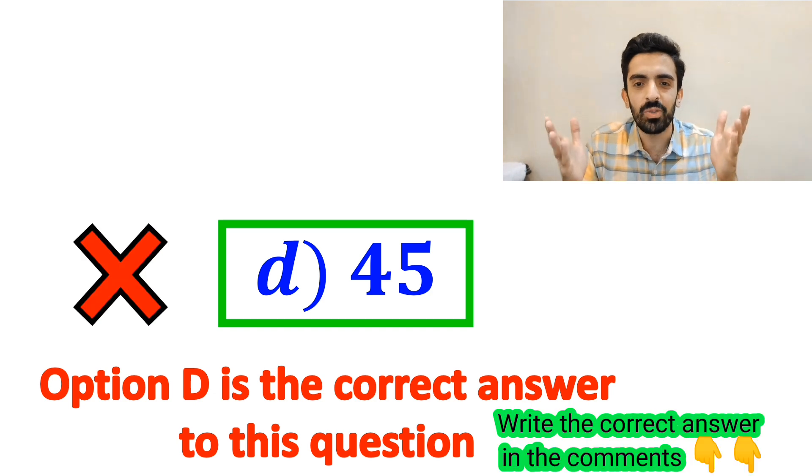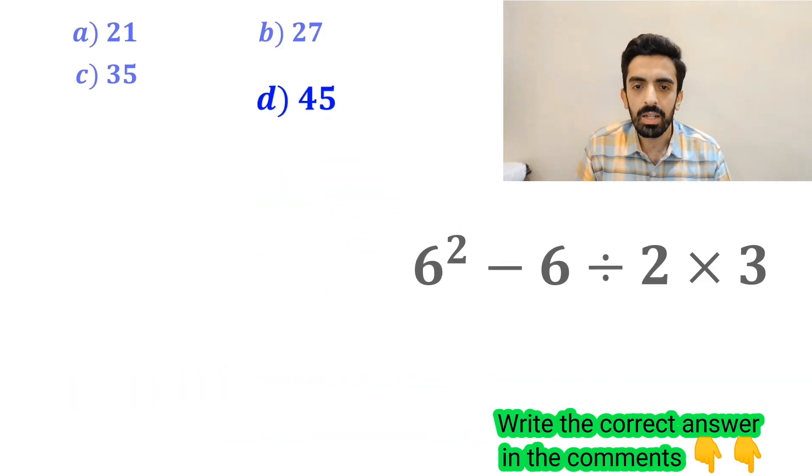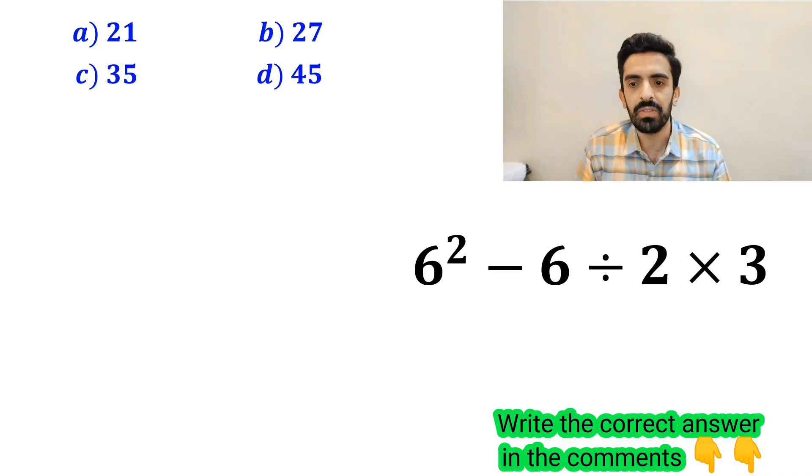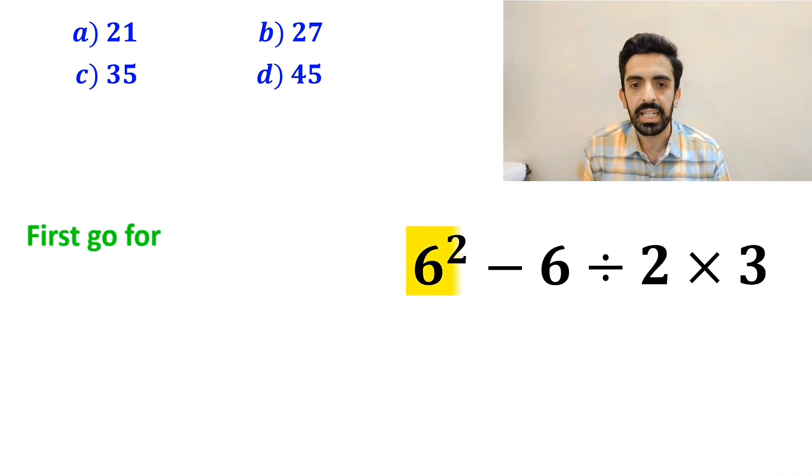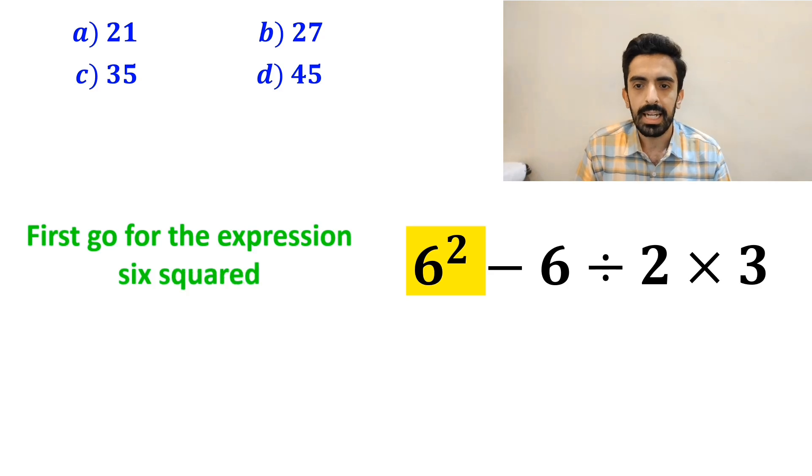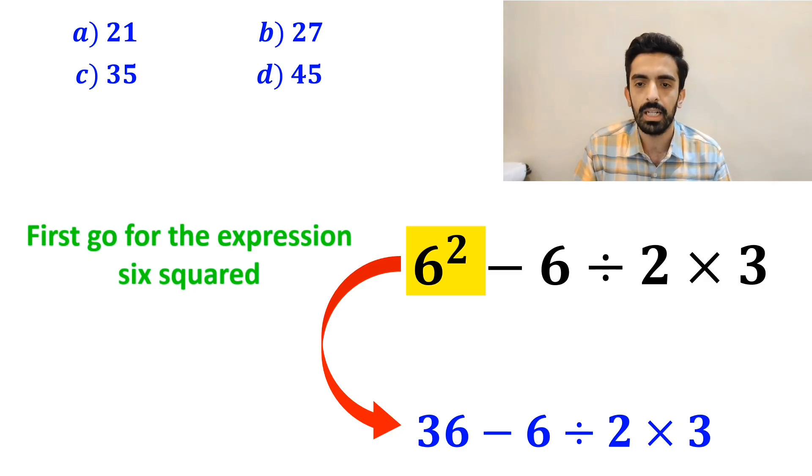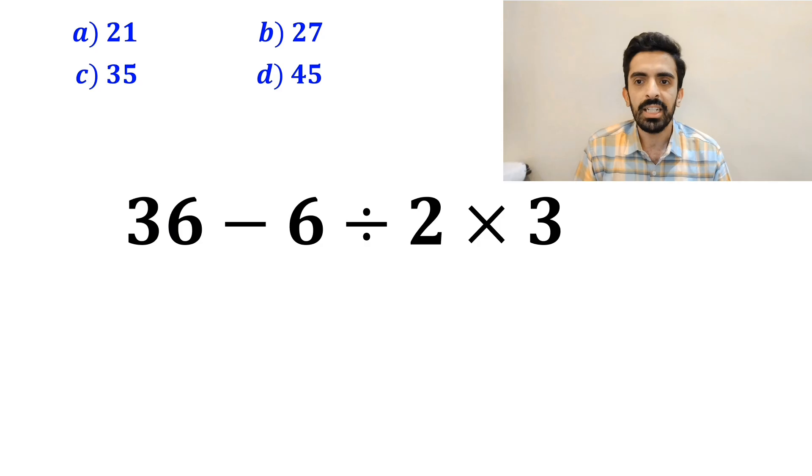But that's definitely wrong. Also, some other people to solve this problem, first go for the expression 6 squared. And they simplify it to 36 minus 6 divided by 2 times 3. In the next step, they usually go for the multiplication between 2 and 3.